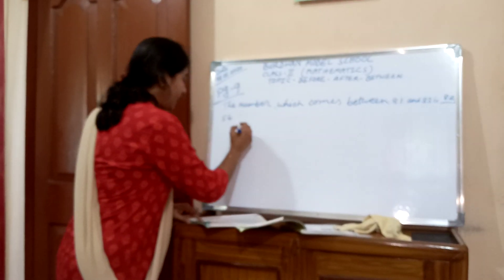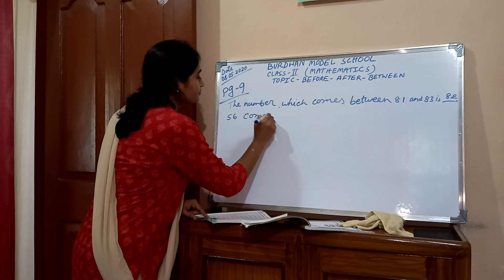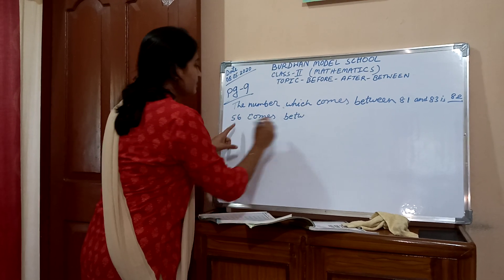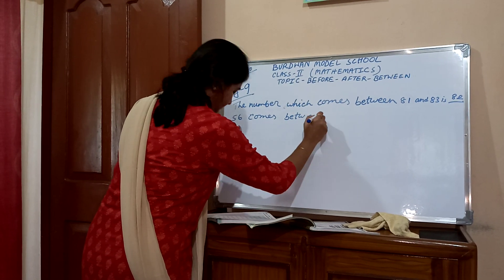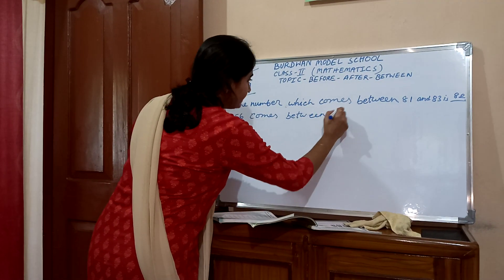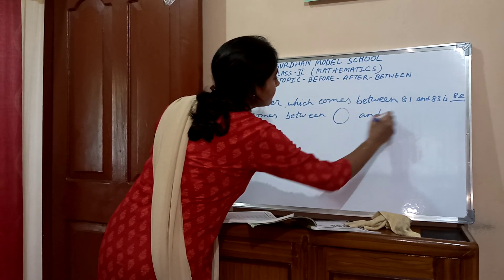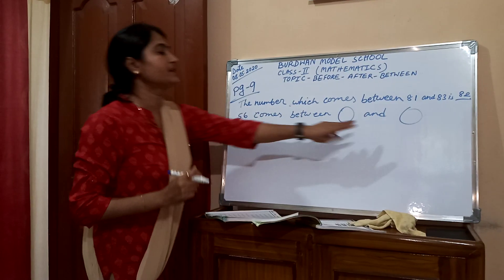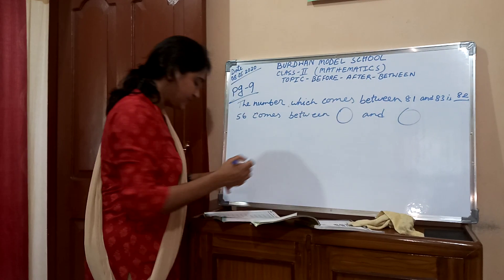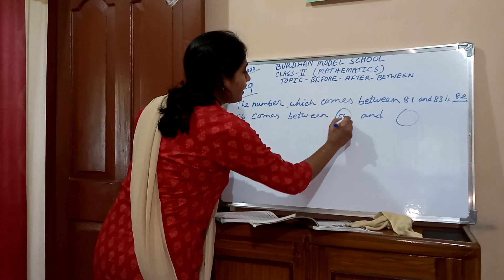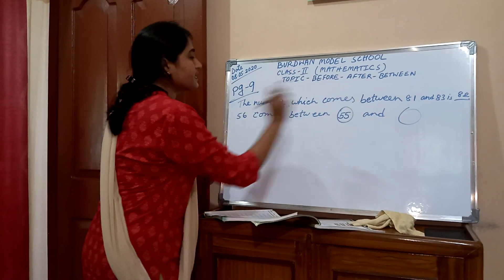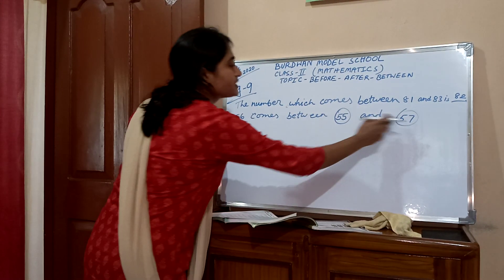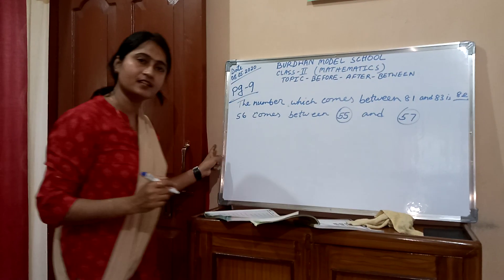56 comes between dash and dash. So 56 is between — here 56 is the number, so the before number is 55, and 56's after number is 57. So: 55, 56, 57. Understood, children?